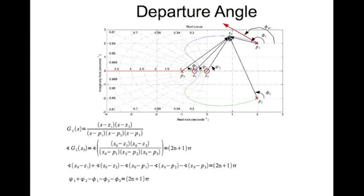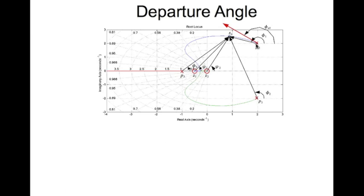Now if we drag S0 to P1, then this vector S0 minus P1 will in fact become the tangent vector, and then phi 1 will become the departure angle phi D1. So what we do is we find an expression for phi 1 and then we'll drag S0 to P1.